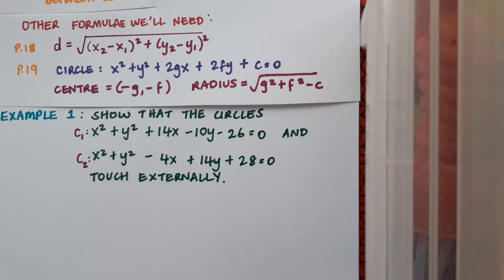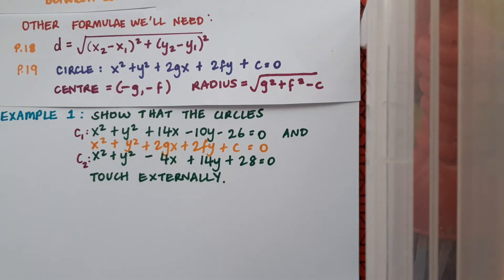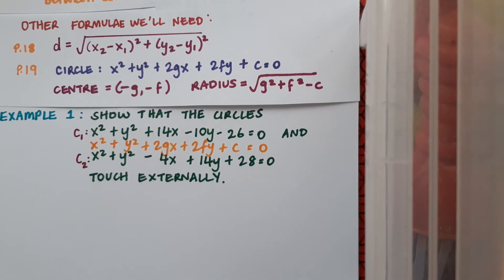So I'm going to start by calling my two circles circle 1 and circle 2 just for my own reference and I'm also making a note of the general form of the equation of the circle. If you're confident then pause the video and give it a go yourself and then see if you're correct, otherwise follow along with me.